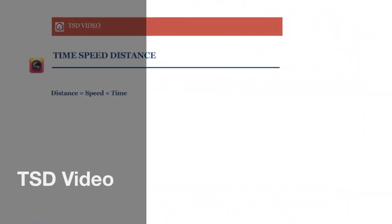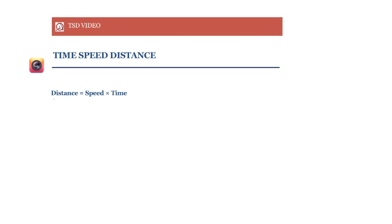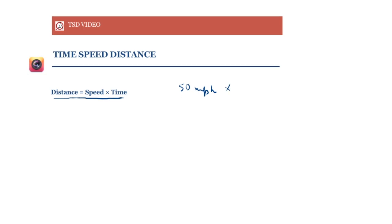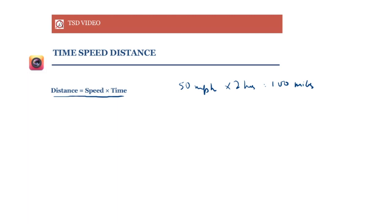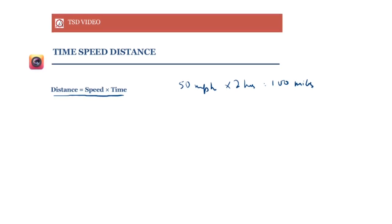Let's start with the formula that we all know quite well: distance is equal to speed into time. If my speed is 50 mph and I travel for two hours, then I'll travel a total distance of 100 miles. This is something we're quite familiar with.